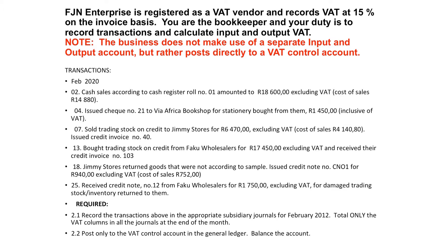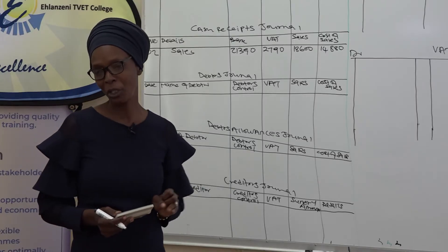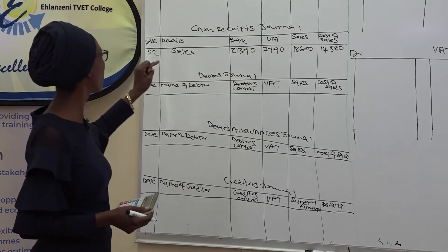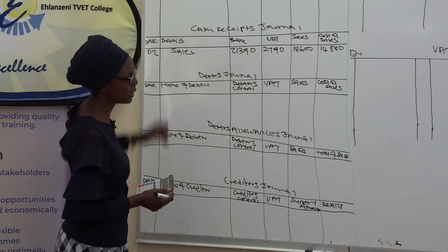On the 4th of February, we issued cheque number 21 to Via Africa Bookshop for stationery purchased from them for R1,450 inclusive of VAT. That means R1,450 is an inclusive amount. Since we are making a payment, it must be entered in the cash payment journal.